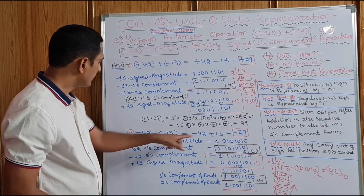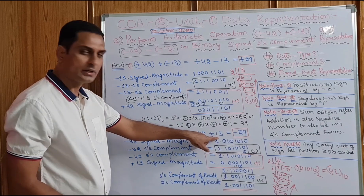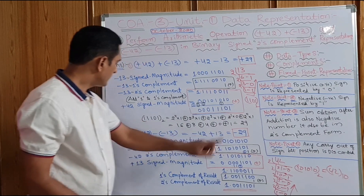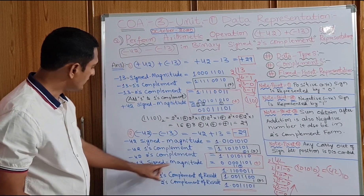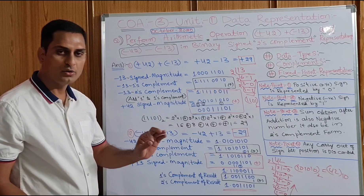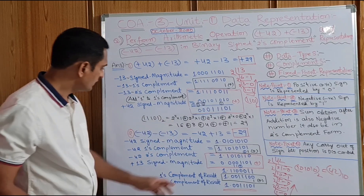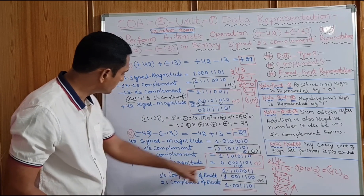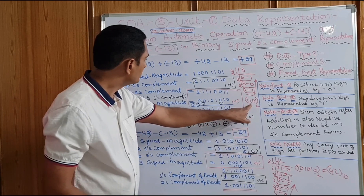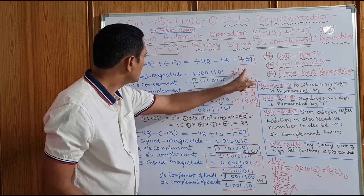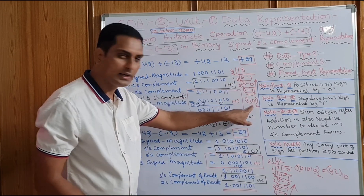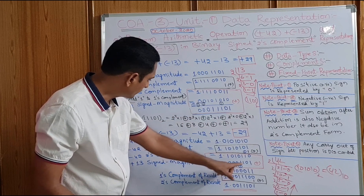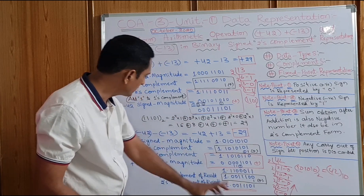What is remaining? Plus 13. Plus 13's signed magnitude value is taken — only one representation because it is positive. The sign bit is 0. The binary number for 13 is 0, 0, 0, 0, 1, 1, 0, 1.